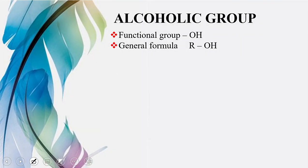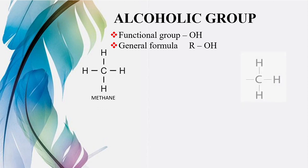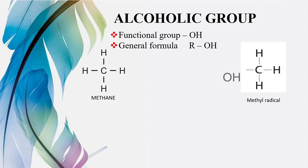Alcoholic functional group: kisi bhi organic compound mein OH agar aapko milta hai to use hum alcohol kahenge, aur iska general formula hai R-OH. Pichle topic mein humne padha tha ke R represents an alkyl radical. To yahan par aap koi bhi alkyl radical attach karein aur uske saath OH likhein to aapka ek organic compound tayar ho jayega. Example ke taur par: humare paas hai methane CH4, isne se ek hydrogen remove kiya to ban gaya methyl radical, aur ab iski jagah OH functional group likhte hain, to yeh ban gaya methyl alcohol ya methanol.